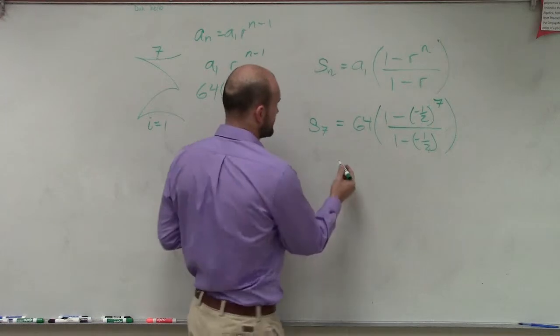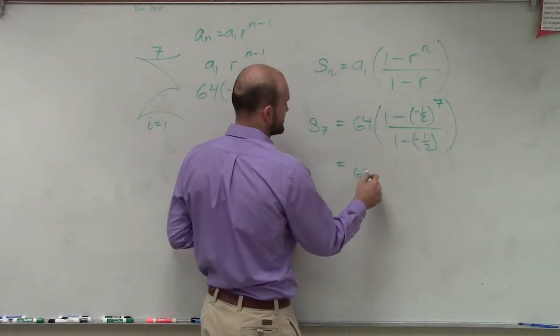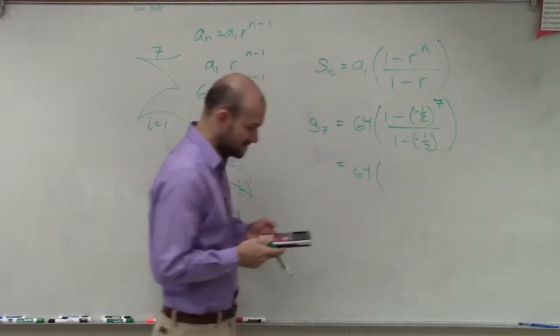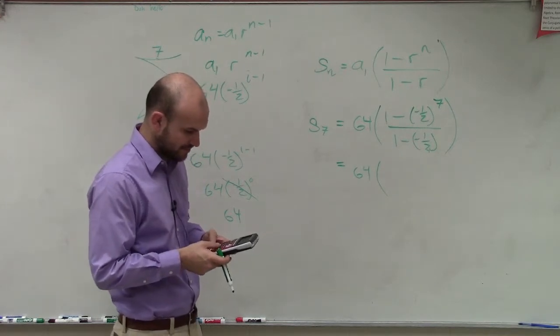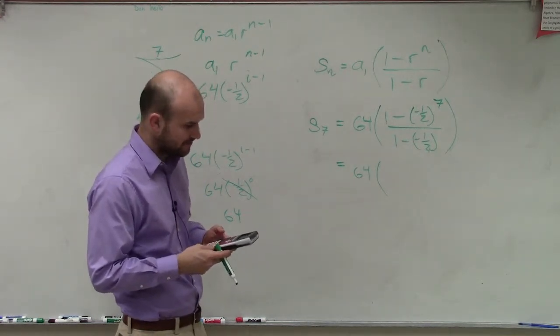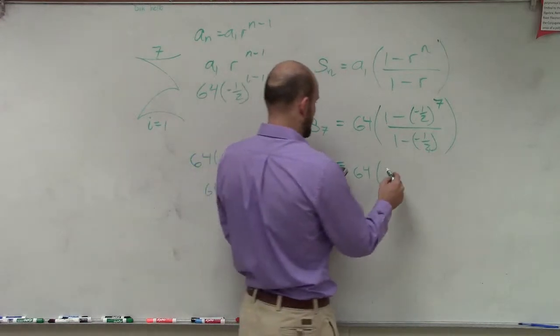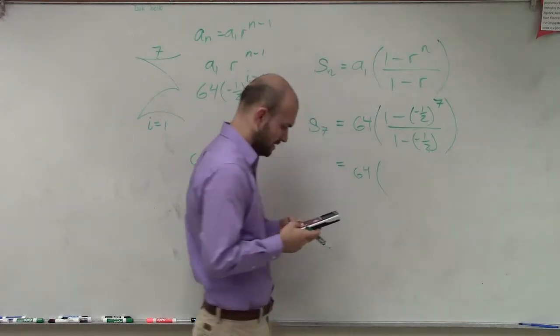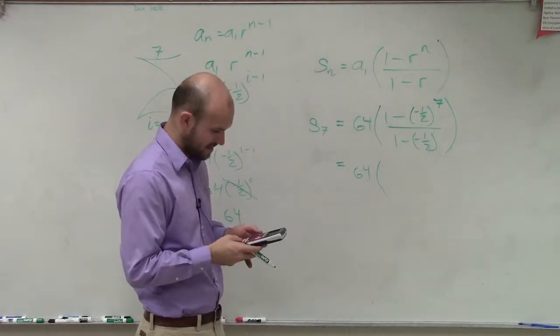So now we just simply are just going to simplify. So we have 64 times, and then we'll just do negative 1 divided by 2, raised to the seventh. So we have, and then 1 minus.